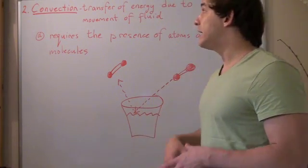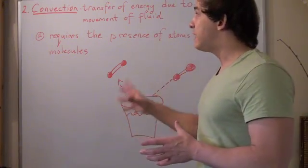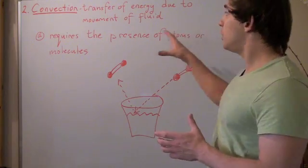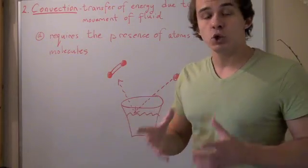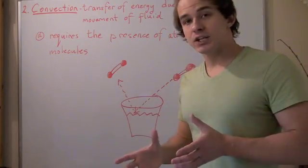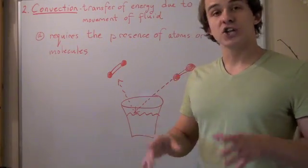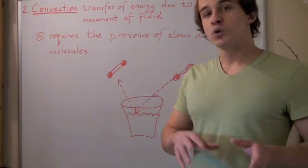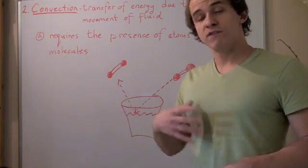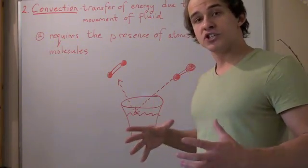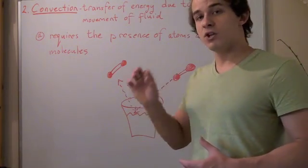The second way by which energy is transferred due to heat is called convection. Convection is the transfer of energy due to the movement of fluids. And fluids can both include gas and liquid. And convection absolutely requires the presence of molecules or atoms within the medium. There is no longer a need for a physical presence or a physical bridge connecting two objects or two systems, but there is a need for those molecules.